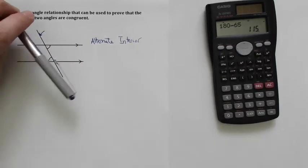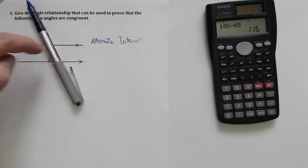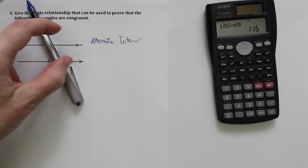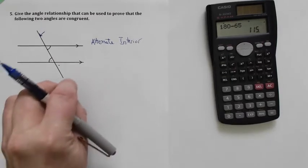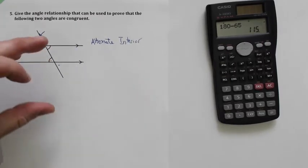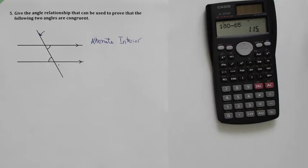It's going to be, you know, are they on opposite or the same side of the transversal, and are they outside or inside the parallel lines. So these are opposite side of the transversal—alternate—and inside the parallel lines—interior.